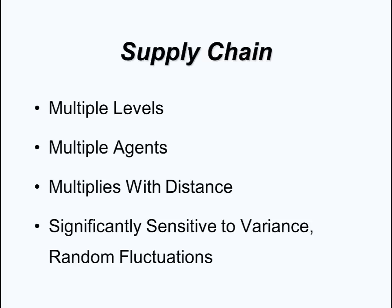A supply chain is a complex network. We are faced with the problem of diagnosing supply chains when we attempt to manage the flow of products or services beyond our own location or level of operations. A supply chain is characterized by multiple levels and multiple agents. Its complexity multiplies with distance from our level of operations. Variance of processes and links is a significant factor in the design of supply chains. A supply chain may grow exponentially as its scope of supervision is increased.